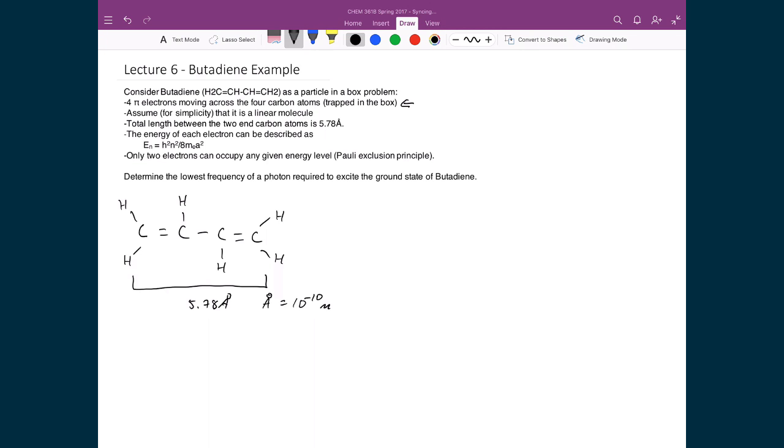We're going to assume that it's a linear molecule so that all we need to do to come up with this 5.78 number is we're just adding up the distances for all of these carbon-carbon bonds. So that just means that this carbon-carbon single bond, that typically has a distance of about 1.54 angstroms. These carbon-carbon double bonds, they typically have distances of 1.35 angstroms.